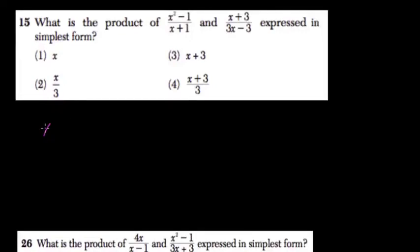Okay, they want us to multiply these two. We have x squared minus 1 over x plus 1 times x plus 3 over 3x minus 3.